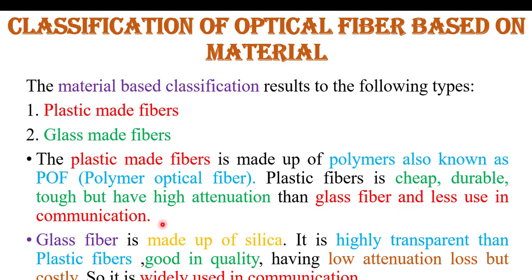Previously, plastic fiber was used for endoscopy. Second is glass fiber. Glass fiber is made up of silica, which is a sand-like raw material. It is highly transparent compared to plastic fiber, so it is good quality and highly transparent, giving low attenuation losses — but it is costly. So it is widely used in communication. The detail of glass or plastic fiber will be explained in my coming videos.